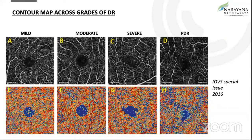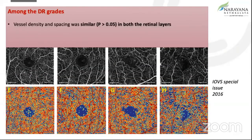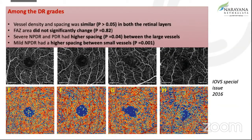This is something we did using our in-house analytic tool, and we published it in the IOVS special issue of 2016, where we saw the contour map across the different grades of DR — mild, moderate, severe, and proliferative diabetic retinopathy. We saw that vessel density and spacing was similar in both layers. FAZ also did not significantly change, but in severe NPDR and PDR they had higher spacing between the large vessels, whereas in mild NPDR the spacing was higher between the smaller vessels.